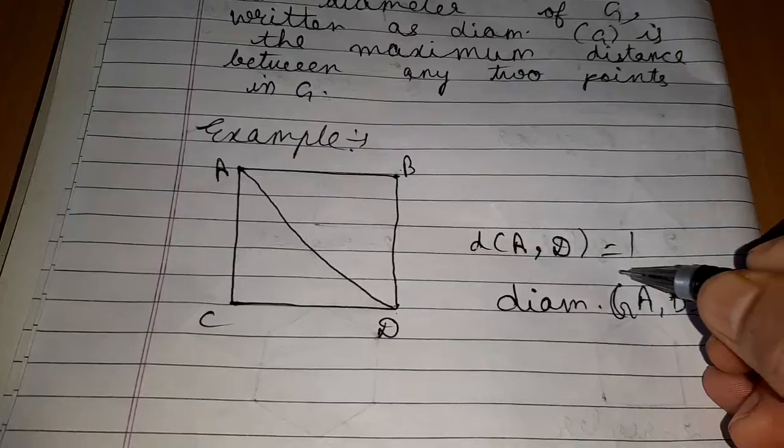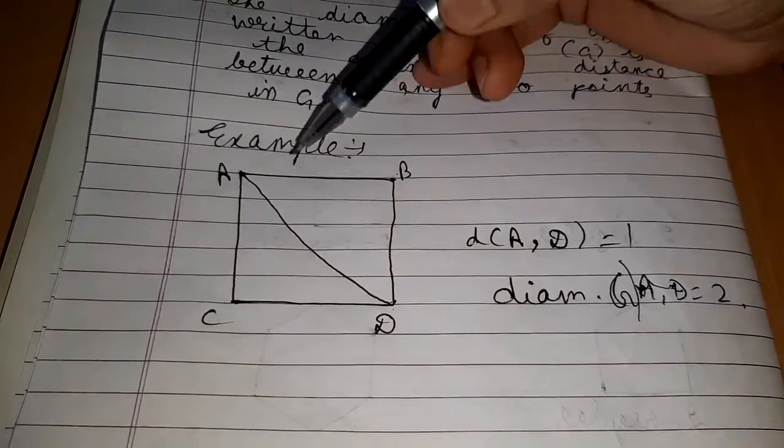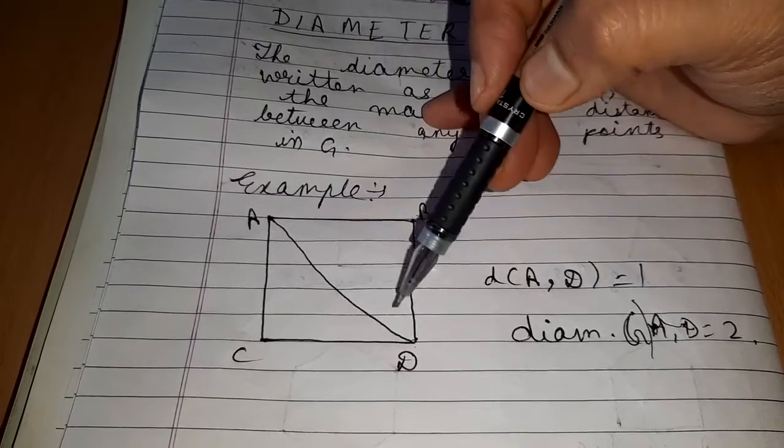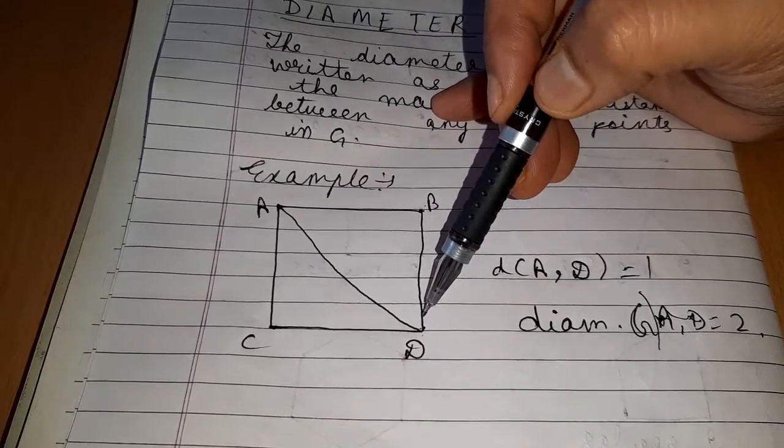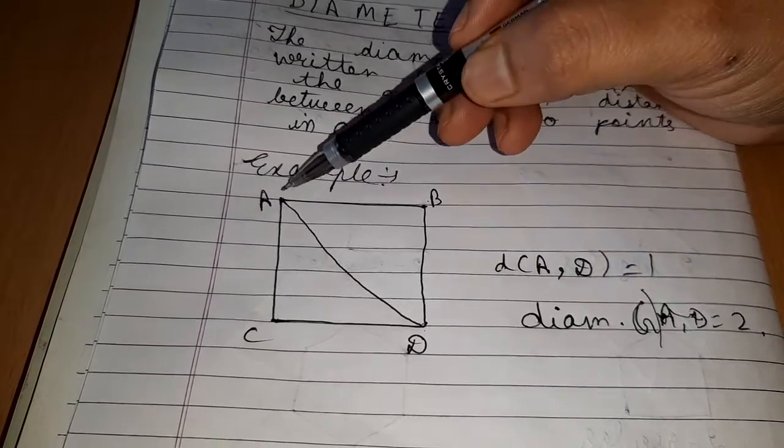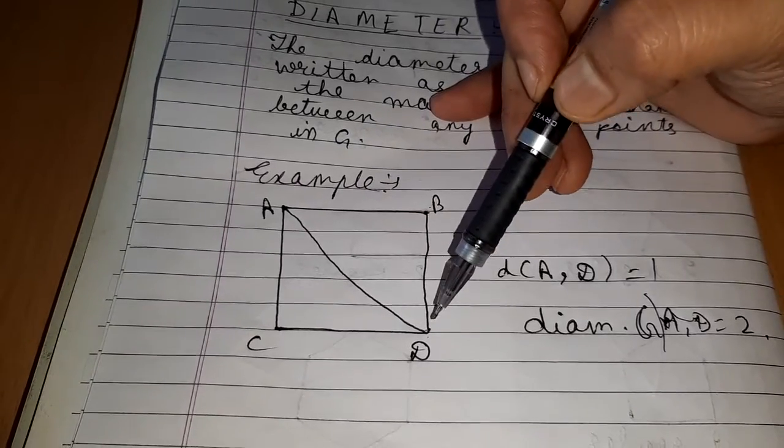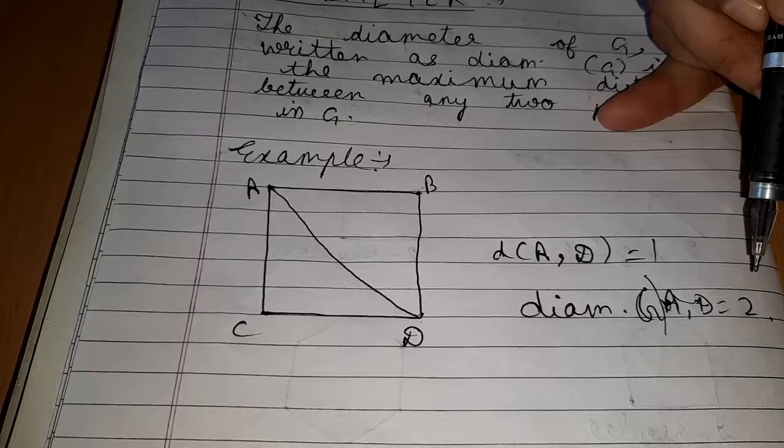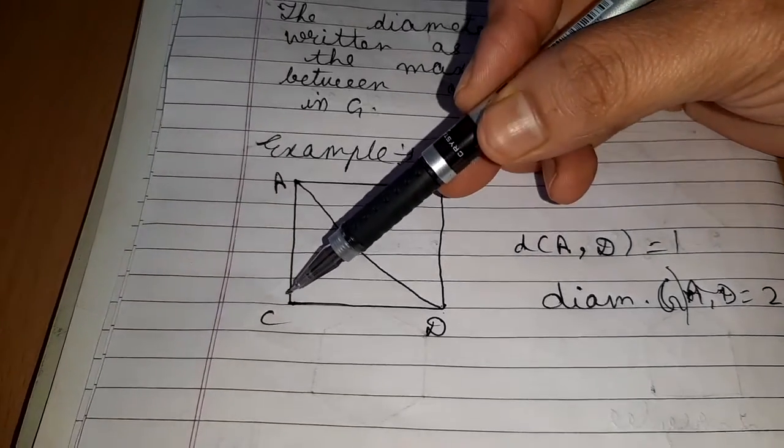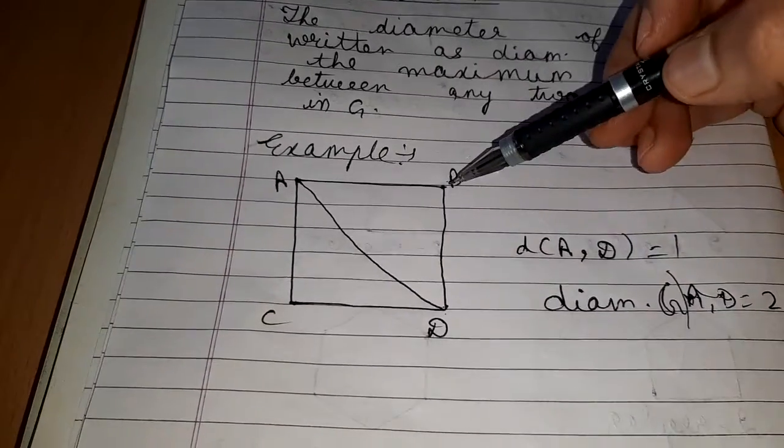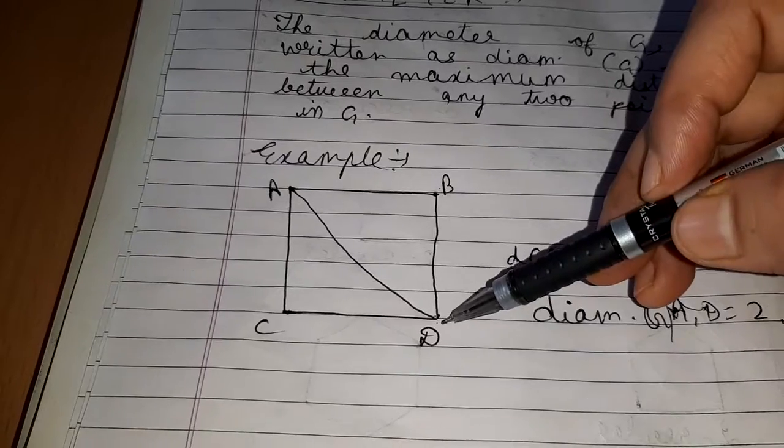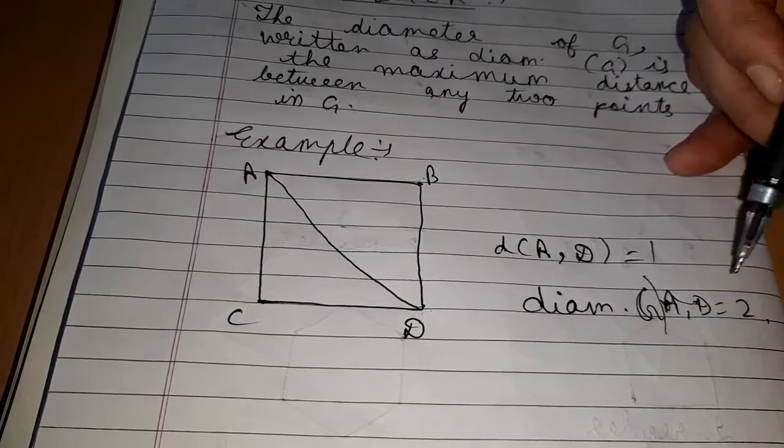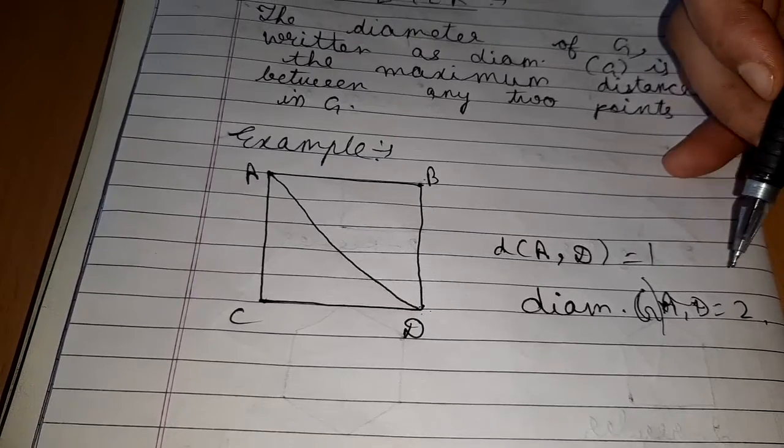Maximum distance of any point. For example, in this example, if we want to go from A to D, then the maximum distance is two. So here diameter of G is two. If we want to go from B to C, then again maximum distance will be two. So diameter of G is two.